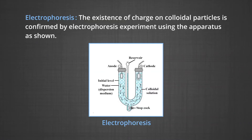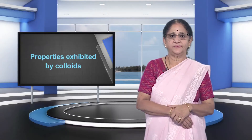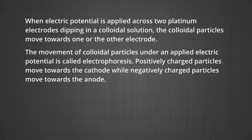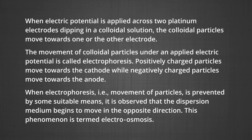Number three, electrophoresis. The existence of charge on colloidal particles is confirmed by electrophoresis experiment using the apparatus as shown in the figure. When electric potential is applied across two platinum electrodes dipping in a colloidal solution, the colloidal particles move towards one or the other electrode. The movement of colloidal particles under an applied electric potential is called electrophoresis. Positively charged particles move towards the cathode, while negatively charged particles move towards the anode. When electrophoresis, that is the movement of particles, is prevented by some suitable means, it is observed that the dispersion medium begins to move in the opposite direction. This phenomenon is termed electro-osmosis.